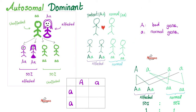Osteogenesis imperfecta has many, many subtypes. The most common one is inherited in an autosomal dominant fashion, which means one parent is affected and the other is healthy. The big A is the bad gene and the small A is the good gene — it could be any letter, of course. Here's the affected parent and here's the normal parent.